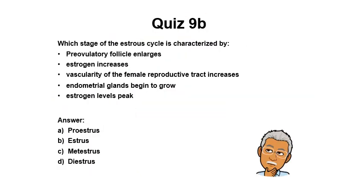For a recap quiz: which stage of the estrous cycle is characterized by pre-ovulatory follicle enlargement, increasing estrogen, increasing vascularity of the female reproductive tract, and endometrial glands beginning to grow with estrogen levels peaking?